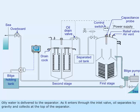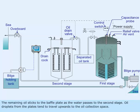Oily water is delivered to the separator. As it enters through the inlet valve, oil separates by gravity and collects at the top of the separator. The remaining oil sticks to the baffle plates as the water passes to the second stage. Oil droplets from the plates tend to travel upwards to the oil collection space.